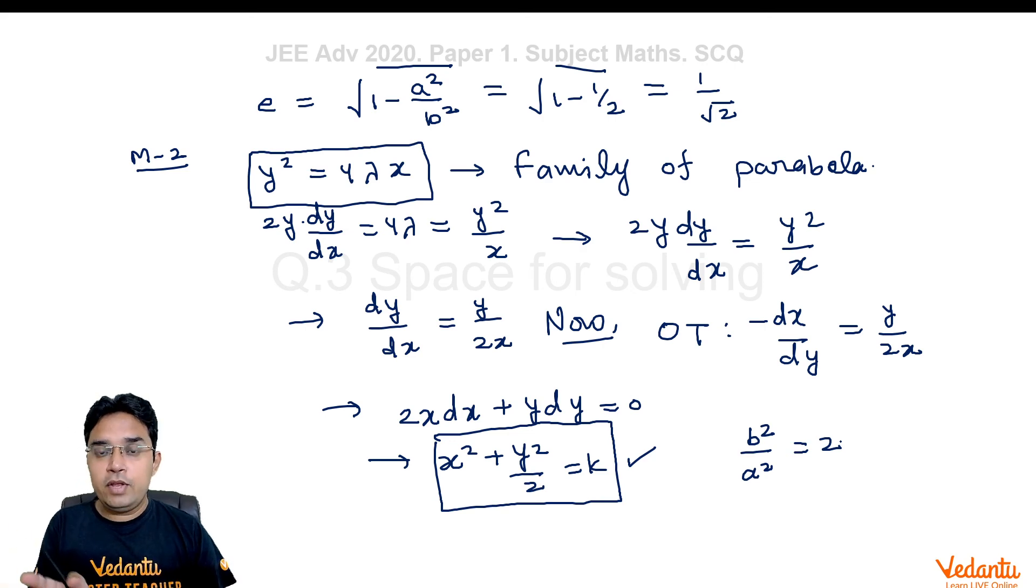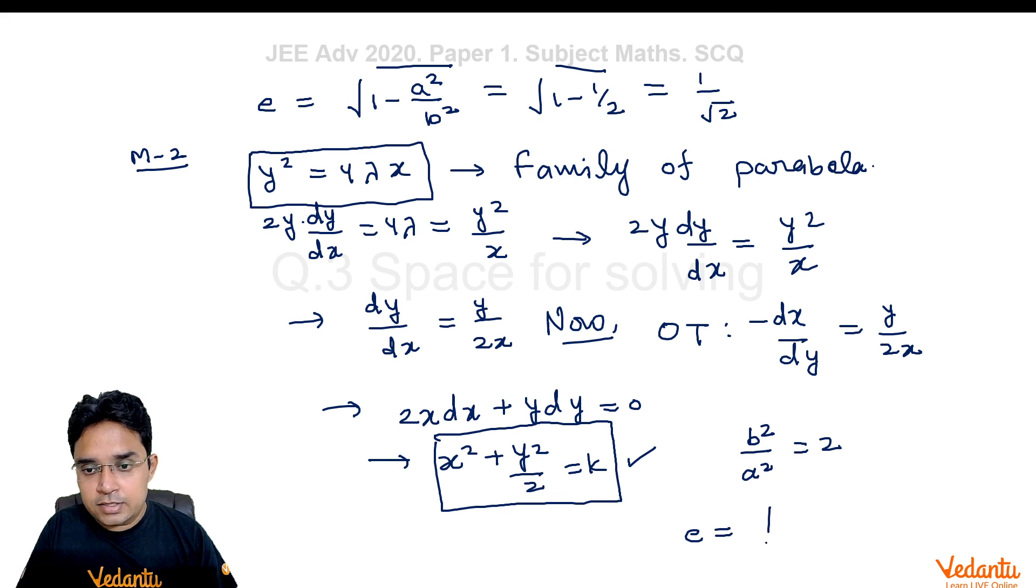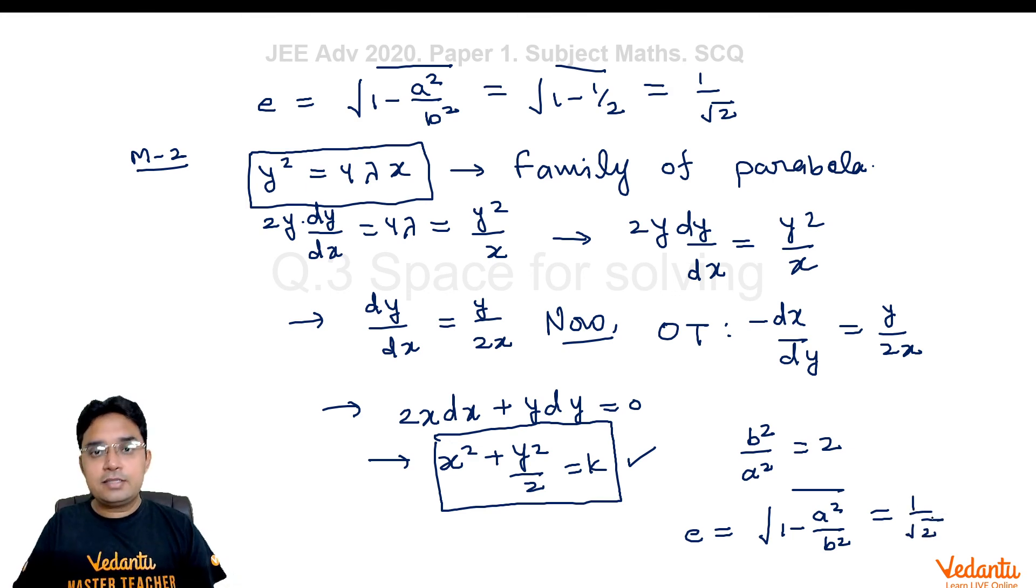Here they have given you extra information that is not needed but I am sure this would have been the motivation to make this question. So, b²/a² = 2 and hence eccentricity is √(1 - a²/b²) that is 1/√2. This completes the solution.